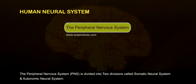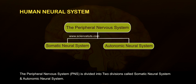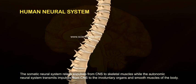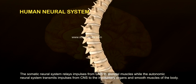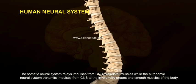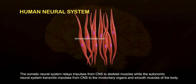The peripheral nervous system is divided into two divisions: the somatic neural system and the autonomic neural system. The somatic neural system relays impulses from CNS to skeletal muscles, while the autonomic neural system transmits impulses from CNS to the involuntary organs and smooth muscles of the body.